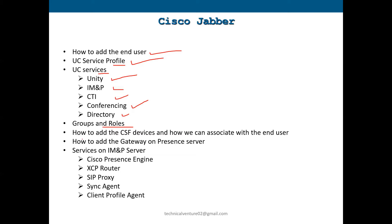Then I will show how to add CSF devices and associate them with the end user. I'll also discuss the gateway on the Presence server — you need to add the CUCM publisher or subscriber IP on that Presence server. Then I'll show the services on the IM and Presence server which need to be activated: Cisco Presence Engine, XCP Router, SIP Proxy, Sync Agent, and Client Profile Agent. Let's start with adding the end user on CUCM.